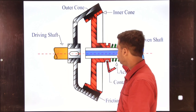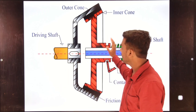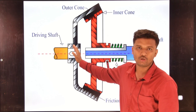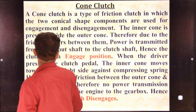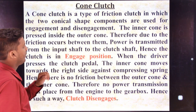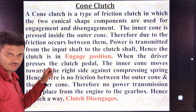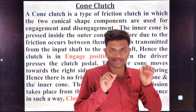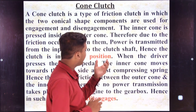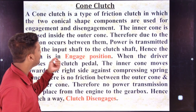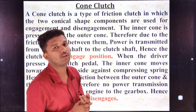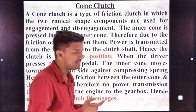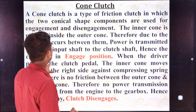The inner cone is arranged such that it is just inside the female cone. Due to the friction that occurs between the inner cone and outer cone — the friction lining — power is transmitted from the input shaft to the clutch system. Input is the driving shaft, output is the driven shaft. Hence the clutch is in the engaged position.